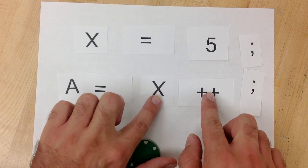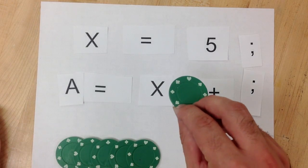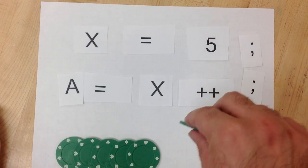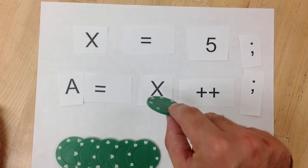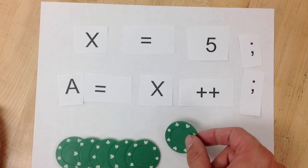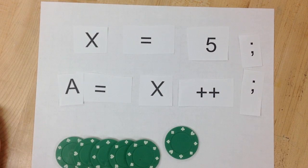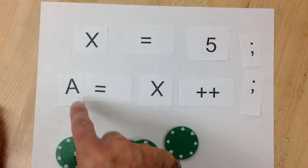If you switch it around, A is going to be equal to x before you do the ++. So the organization of this basically determines: do you want x to be incremented already or not when you're assigning A the value?